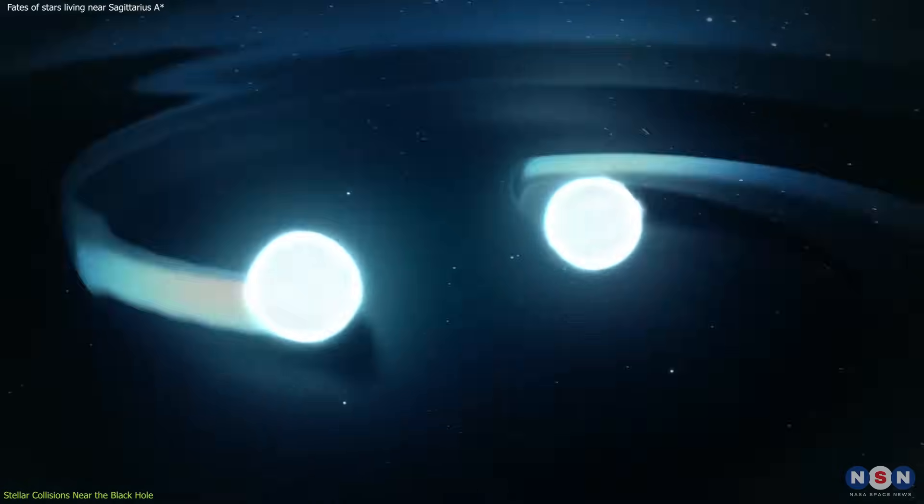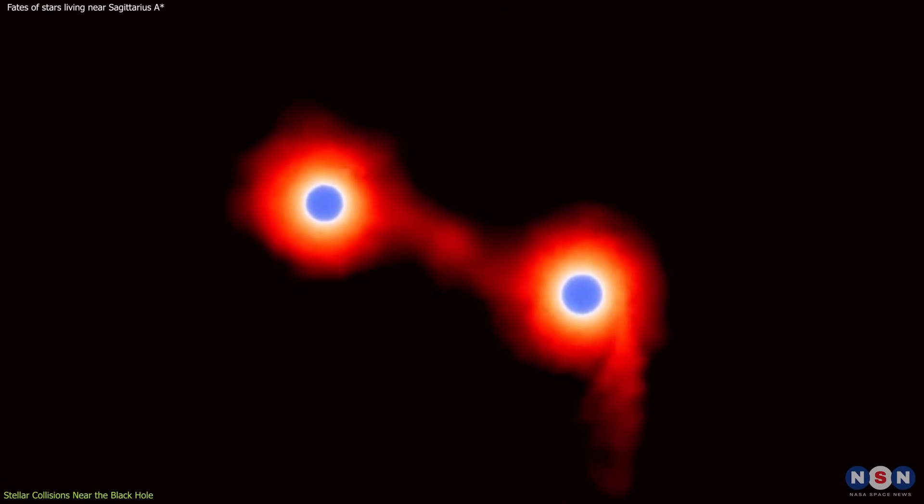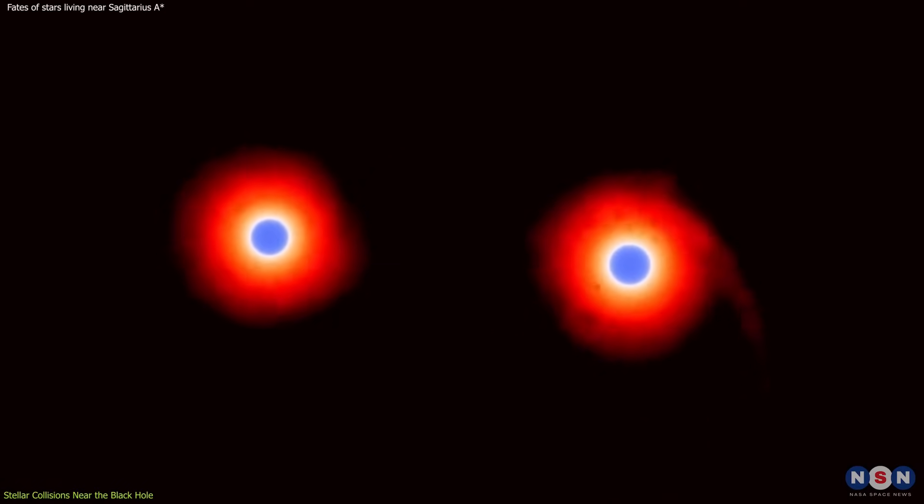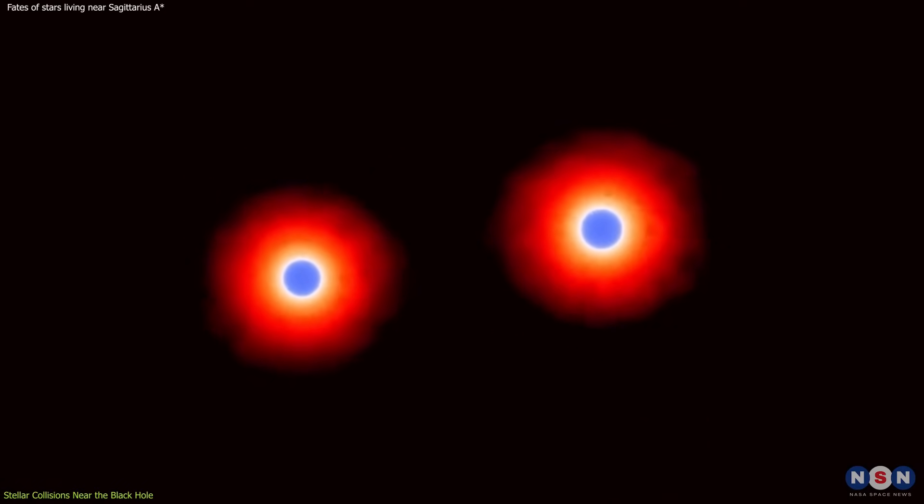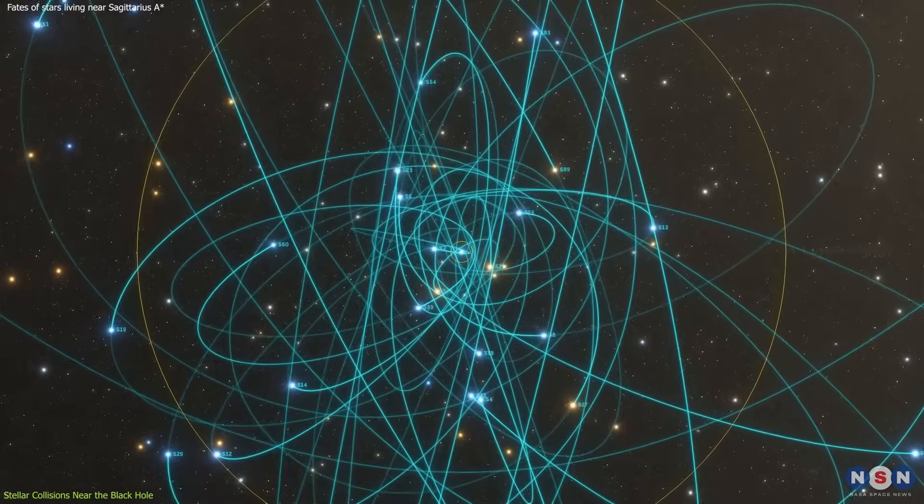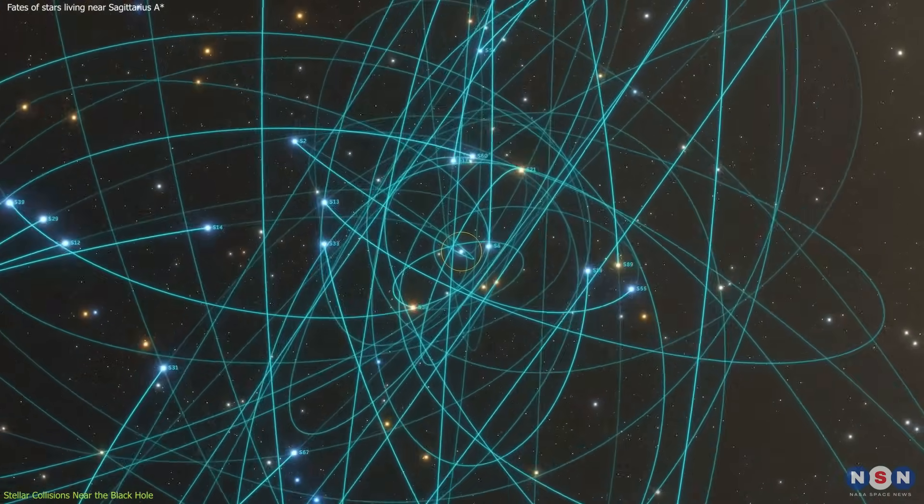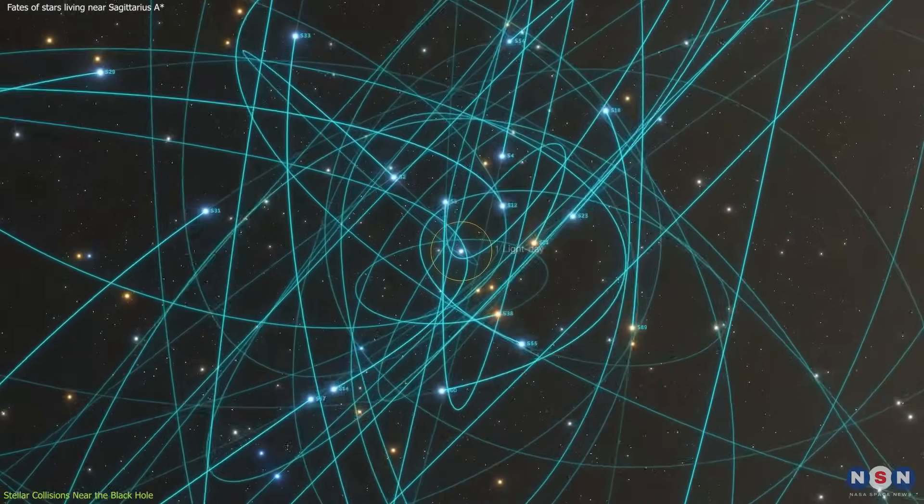However, these are not the cataclysmic head-on crashes one might envision. Instead, they are more akin to violent high-fives, where stars graze each other, shedding some of their outer layers in the process. The intensity of these encounters depends on various factors, including the stars' speeds and the extent of their overlap during the collision.